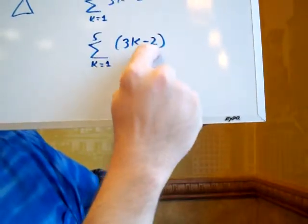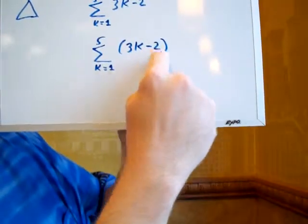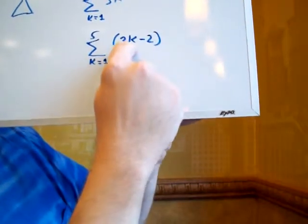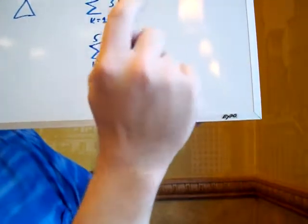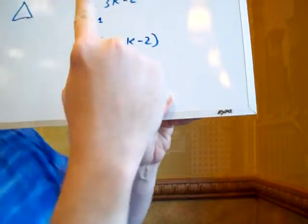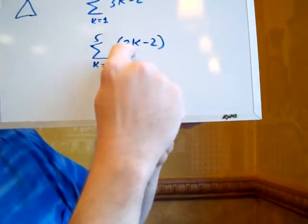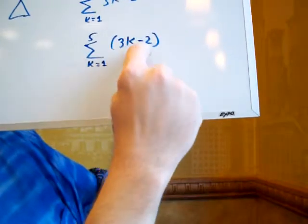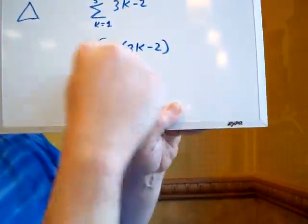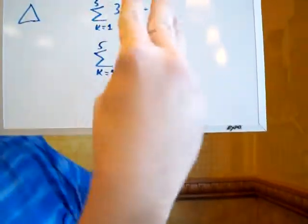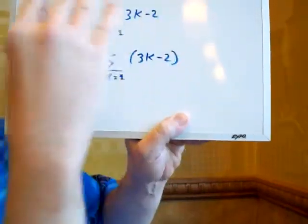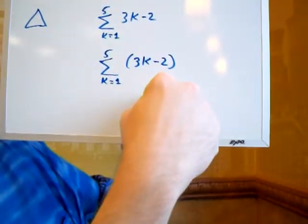And then you'll put the 4 over here and 3 times 4 is 12 and 12 minus 2 is 10. And then the same thing you'll do is you'll put the 5 over here. 5 times 3 is 15 and 15 minus 2 is 13. So 1 plus 4 plus 7 plus 10 plus 13 is 35. And that's the answer to this.